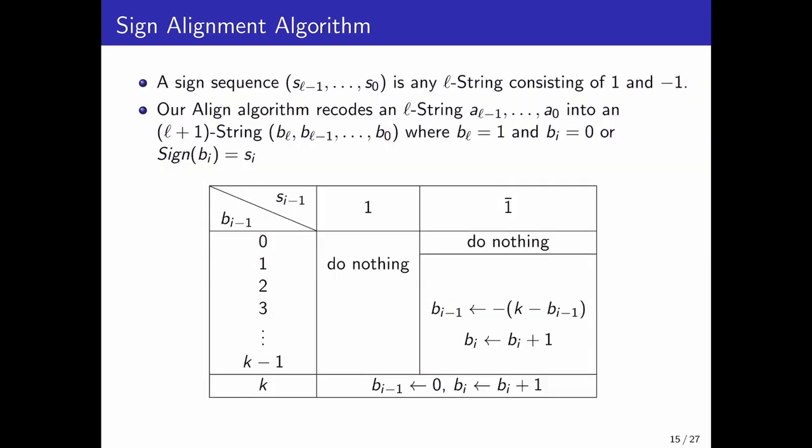Next, we will discuss about sign alignment algorithm. Our align algorithm inputs a sign sequence of 1 and 1 bar of length L plus 1 while the length of the input scalar is L. The algorithm recodes the scalar right to left by tracing two simultaneous entries at each step. It follows the following table. So in this table, we can say the top row is 1 or minus 1, which is the entries of the sign sequence. And the column represents entries of the input scalar.